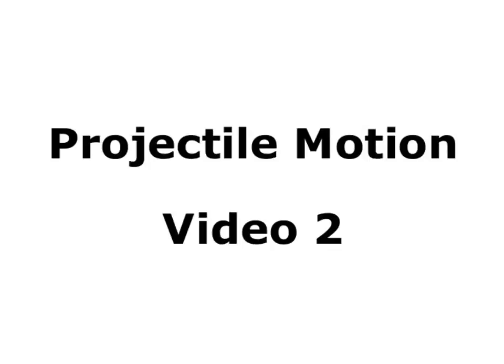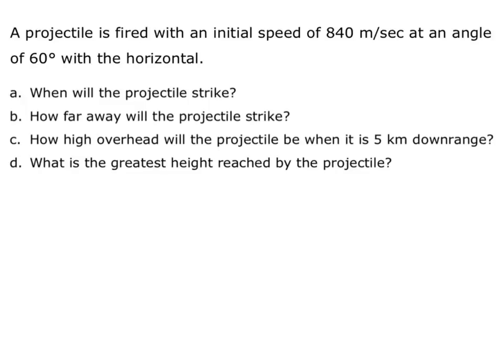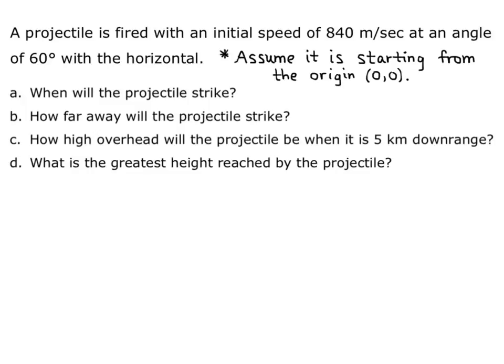This is Katherine Schmer at Chattanooga State Community College, and this is video 2 of projectile motion. A projectile is fired with an initial speed of 840 meters per second at an angle of 60 degrees with the horizontal. We want to know when the projectile will strike, how far away it will strike, how high overhead it will be when 5 kilometers downrange, and what is the greatest height reached. Because we're not told a starting point, we assume it is starting from the origin, 0, 0.